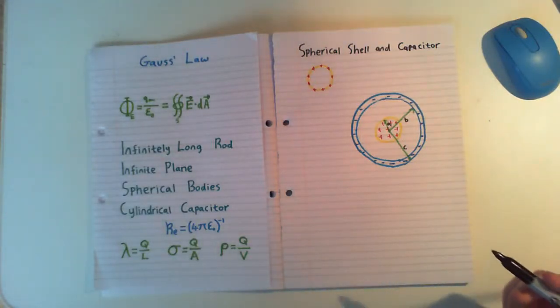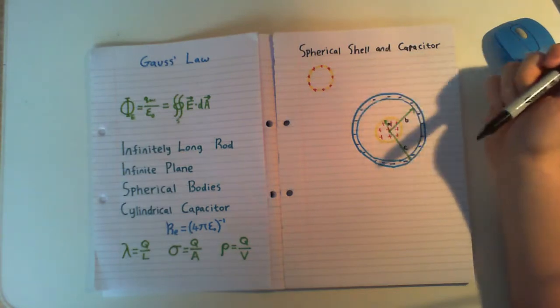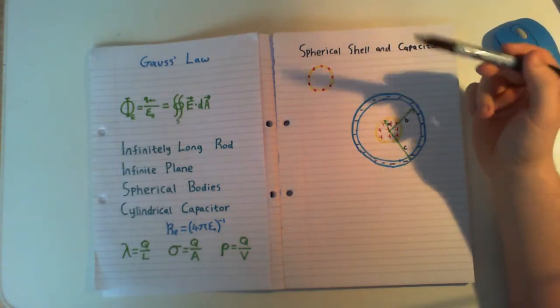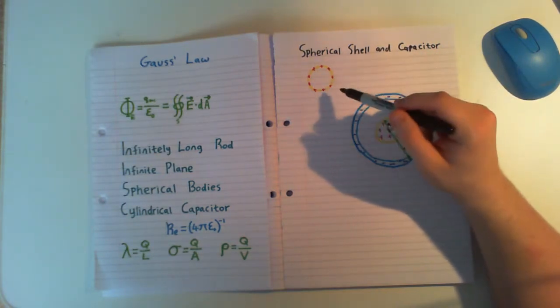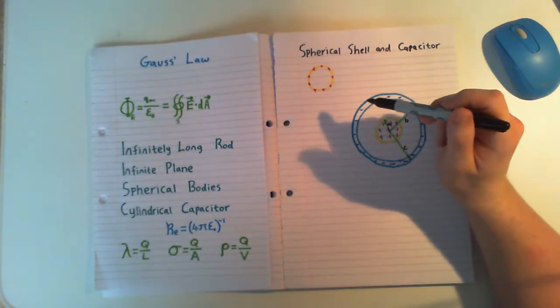Right, we're going to be continuing where we left off with our spherical bodies for Gauss's law in our electricity and magnetism module. And for this one we're going to be looking at a spherical shell and we're going to be looking at a spherical capacitor.